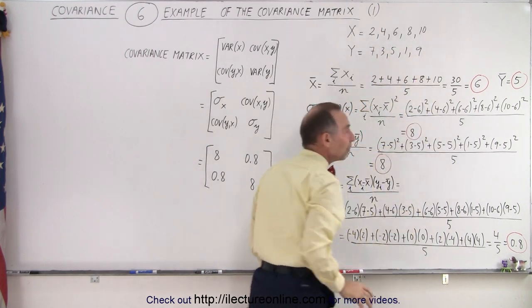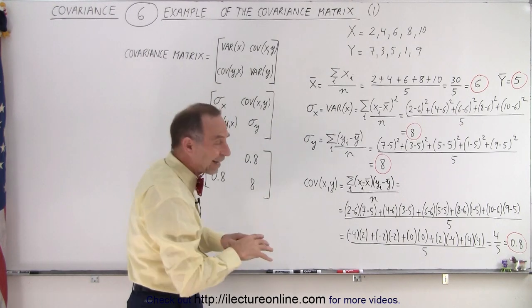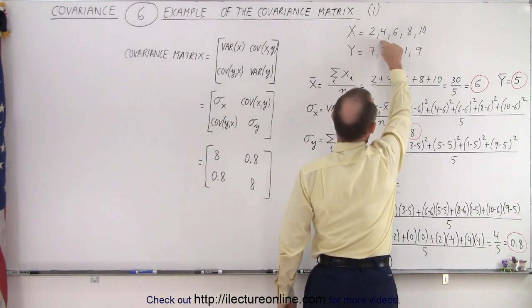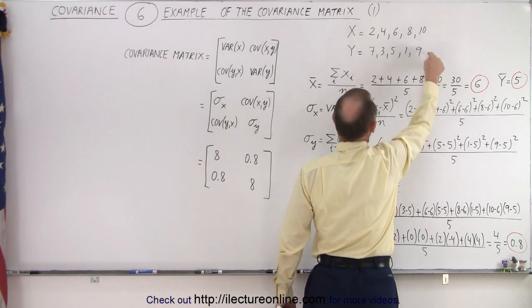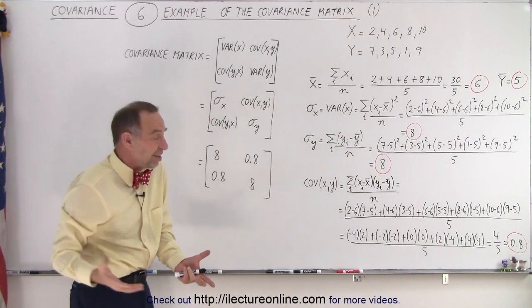There doesn't seem to be that much of a system or trend in that second data set. It's kind of random, and that's why a nicely organized data set compared to a very random data set will give you a very small covariance number, and that's what we see.